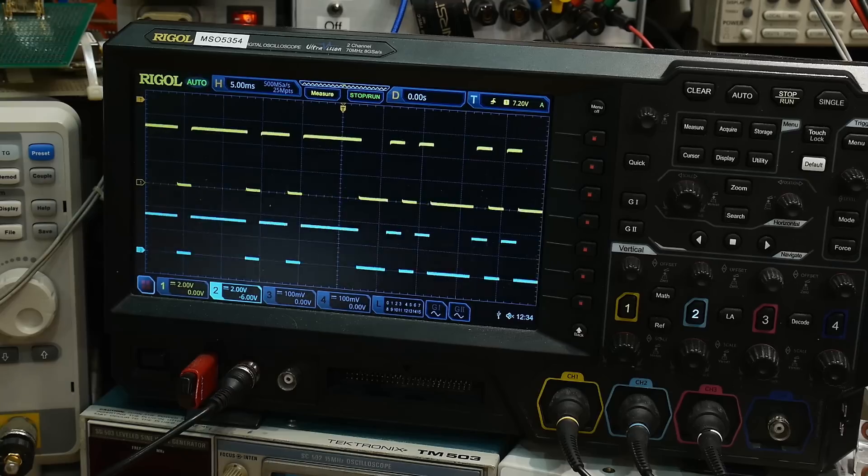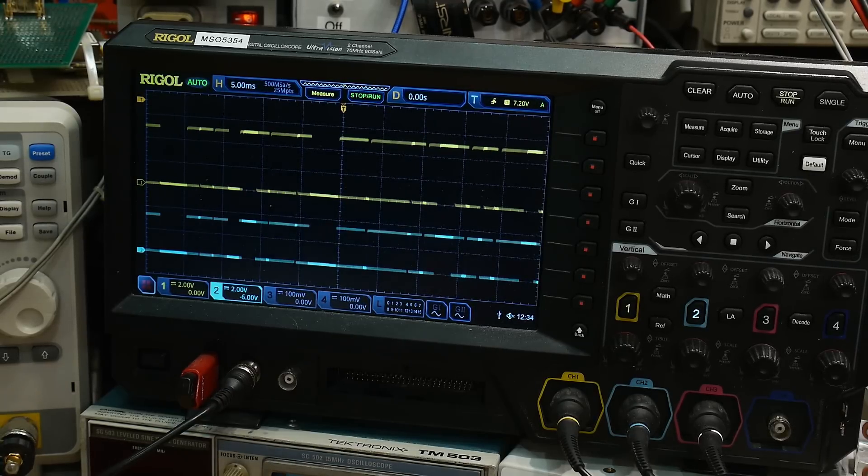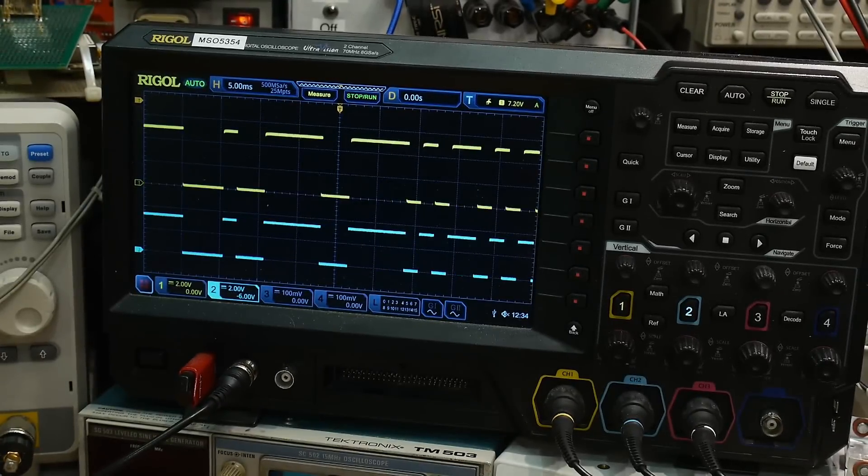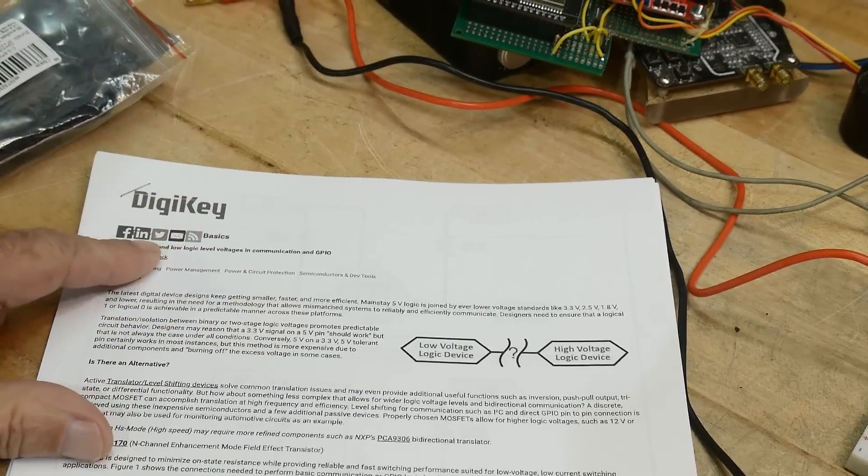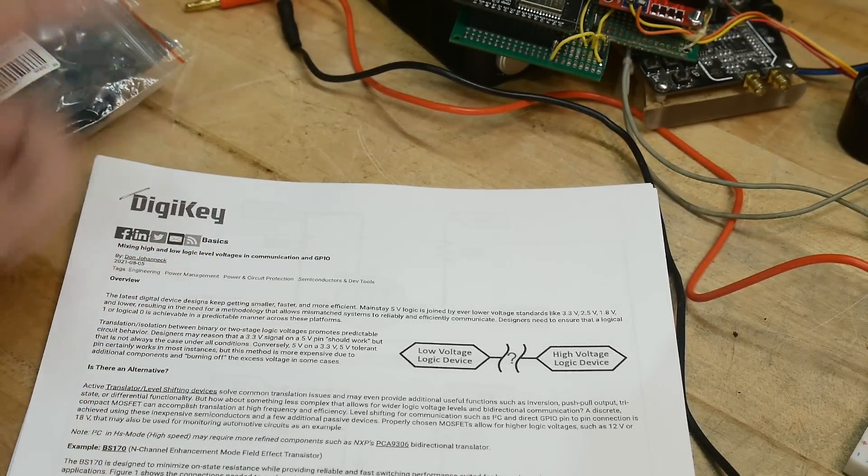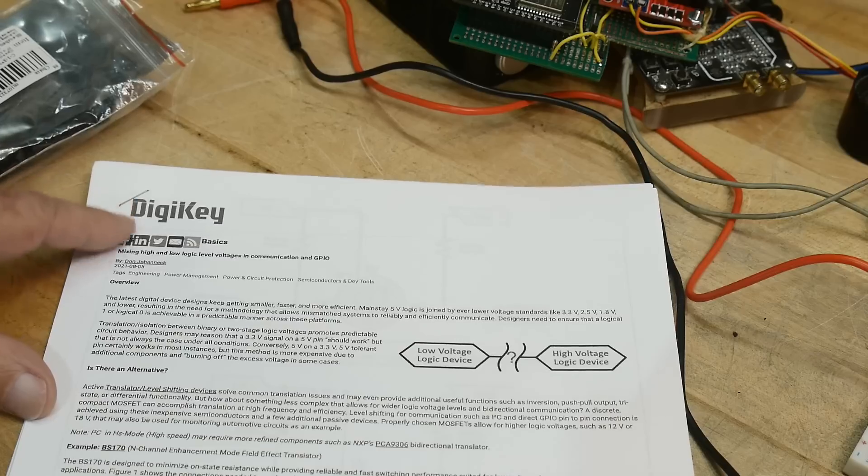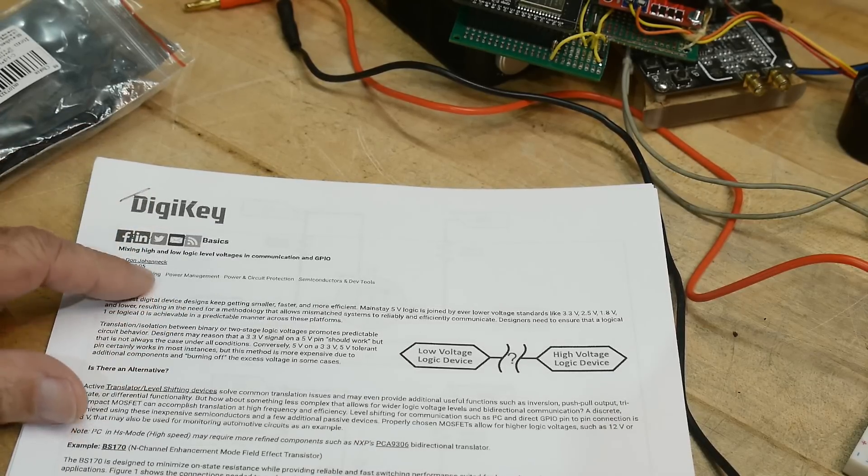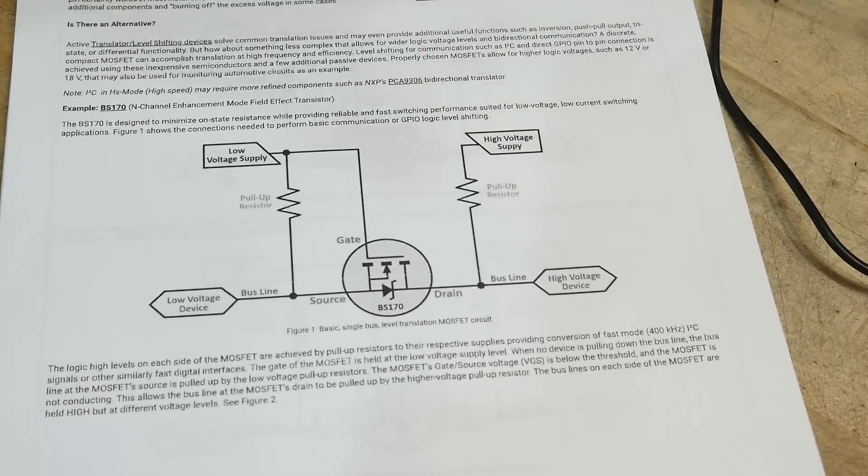I was going to draw some pictures, but I found some online, so we'll just use theirs. This is actually from Digikey. Digikey has a basics where they cover certain topics and have white papers on certain things, talking about level conversion. We're going to do that with this circuit here.